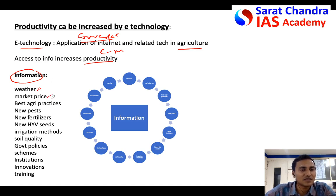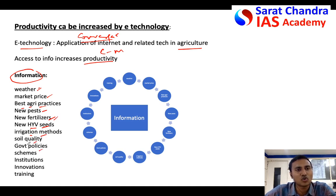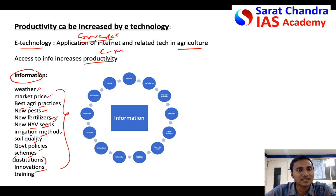Farmers need information on weather forecasting via SMS, right market prices, best international agricultural practices, new pest warnings from other states, new fertilizers suitable for their soils, high yield variety seeds, better irrigation methods, soil quality, new government schemes and policies, relevant institutions they can approach, and latest innovations from India or abroad. If farmers can access all this through e-technology, it would definitely increase agricultural productivity in India.